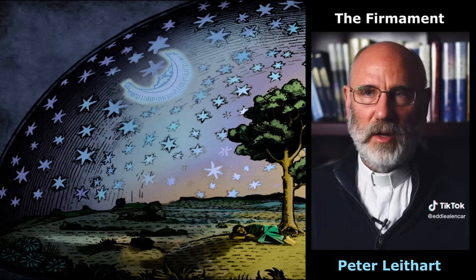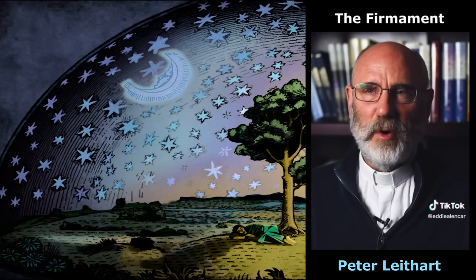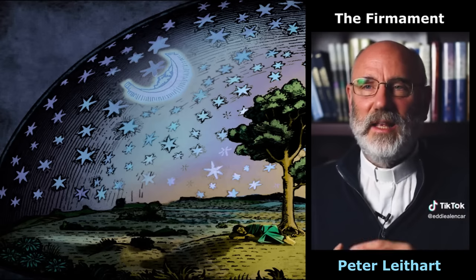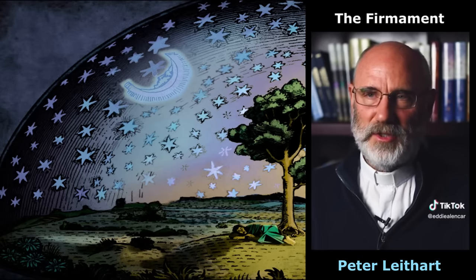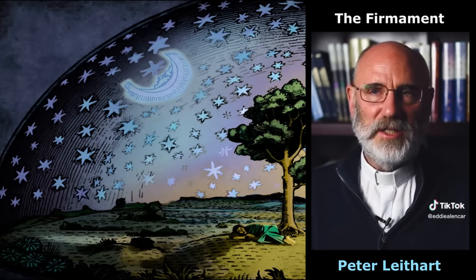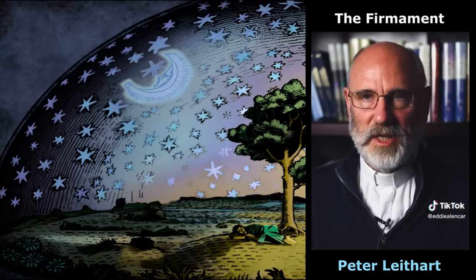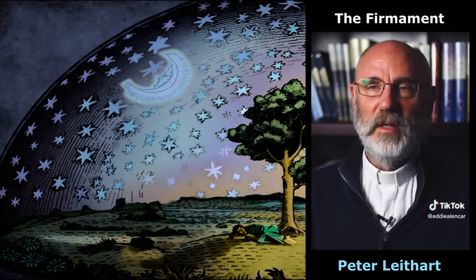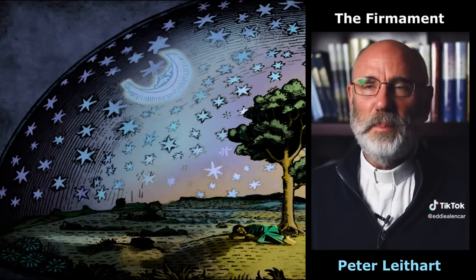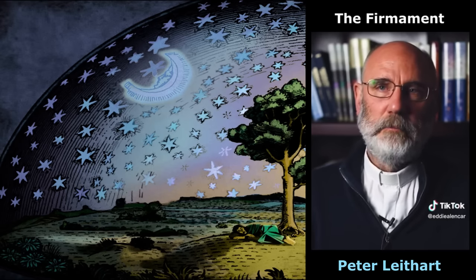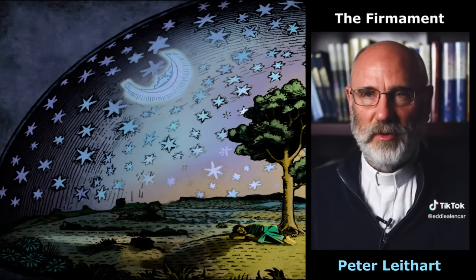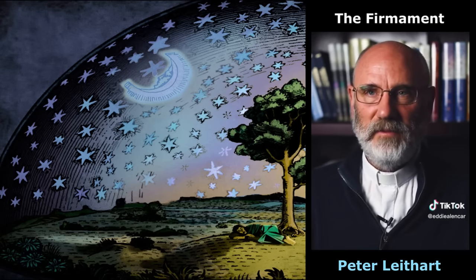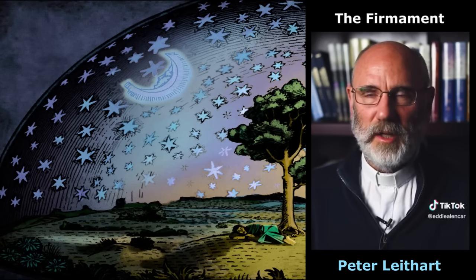There's a poetic parallel between the firmament and the sanctuary. I think the firmament — this thick barrier — corresponds to the holy place of the temple. The holy place is where we have the lampstand, which represents the sun, moon, and stars. The holy place is where we have the bread of God, and the bread of God comes down from the sky during the wilderness wanderings as manna — God feeds Israel with the bread of angels, as the Psalms tell us. That's another indication that the firmament corresponds to the holy place.